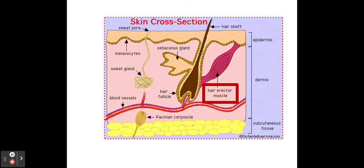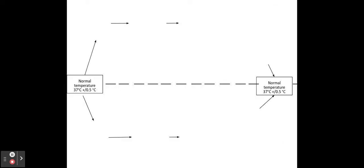Another term we need to know is the hair erector muscle. This contracts and relaxes to either cause the hairs to stand on end or cause them to lie flat. If the hairs are standing on end, this traps an insulating layer of air. This is how body temperature is regulated in humans.